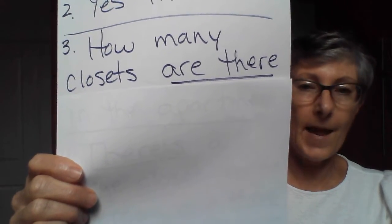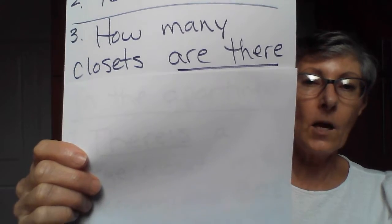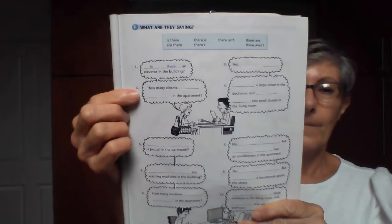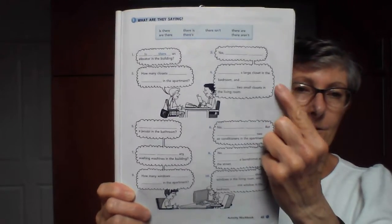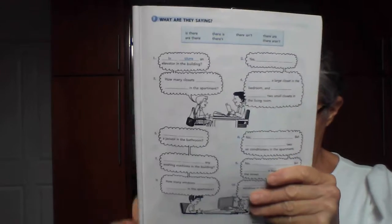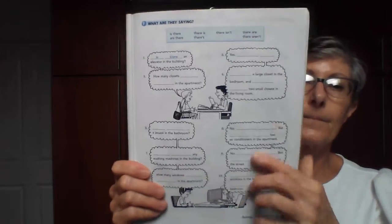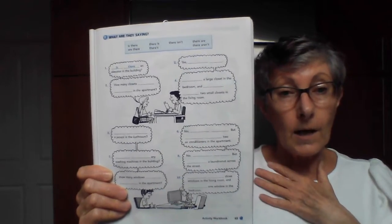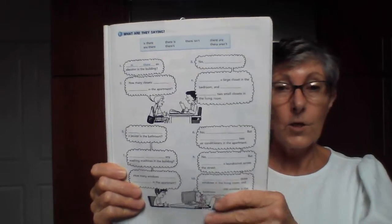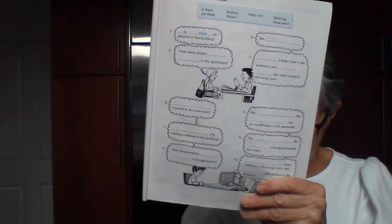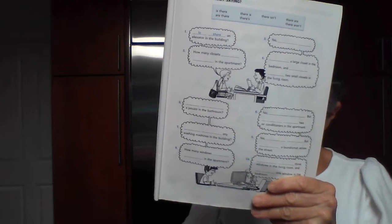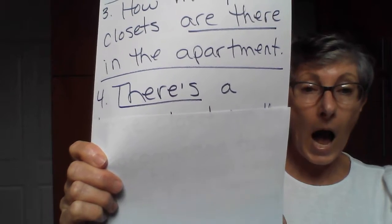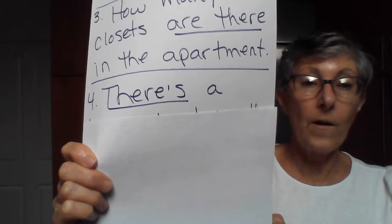Then she asks another question: 'How many closets are there? How many closets are there in the apartment?' The answer — we have to look at this for a minute — 'a large closet.' Now, is that singular or plural? Correct — singular! So we need to use 'there's' because it is singular — 'there's' or 'there is.'